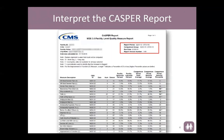On the top right-hand side, you will see the report period, which is selected by you, the user, the comparison group which you can change if you decide to but will be automatically populated when you open the CASPER reporting system, the run date which is the date that you ran the report on, and the version number, which is MDS 3.0.